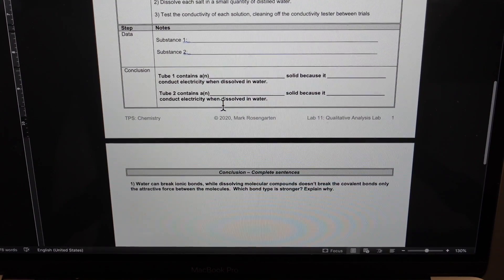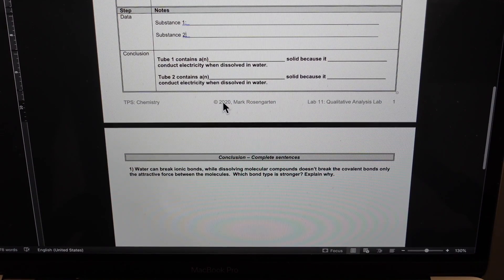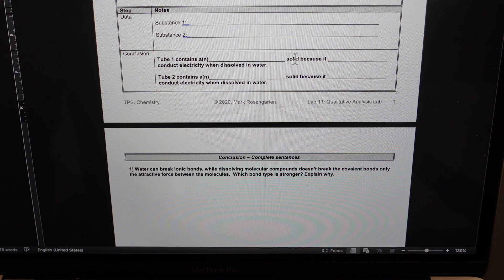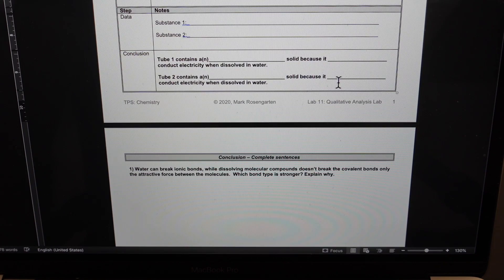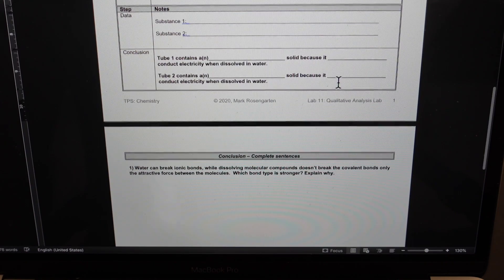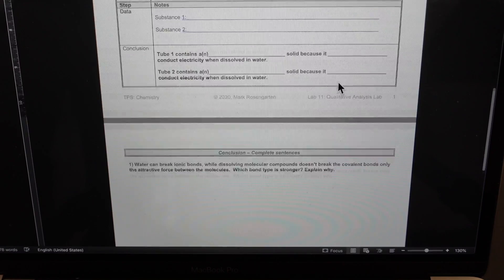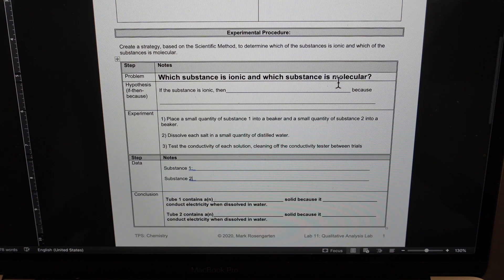And then make your conclusion. Does tube one have an ionic or molecular solid? Because it did or did not conduct electricity and the same with tube two. Once you've dealt with that, there's a couple of questions to finish it off and that is your entire lab. So let's get on to the procedure.